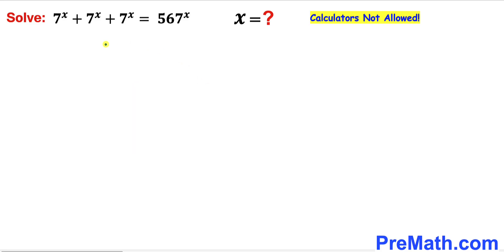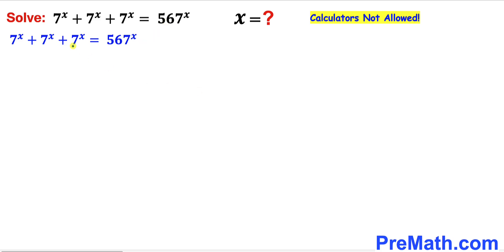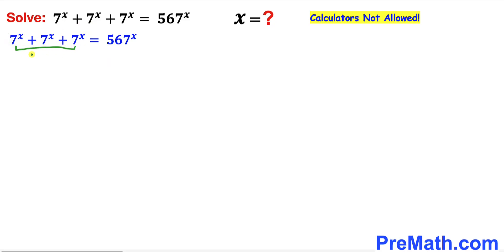Let's go ahead and get started and focus on this equation. Looking at the left hand side of this equation, we can see we have 3 like terms of 7^x. So therefore the left hand side could be written as 3 times 7^x.